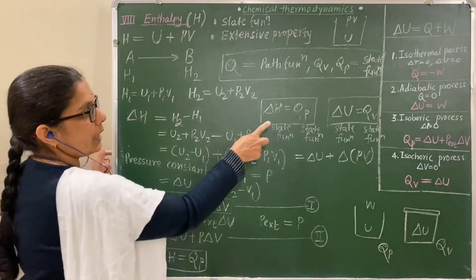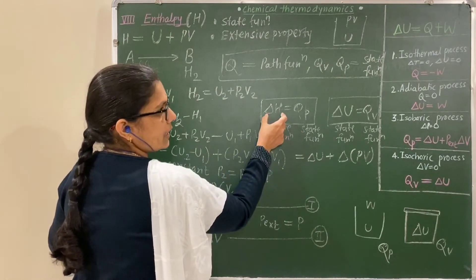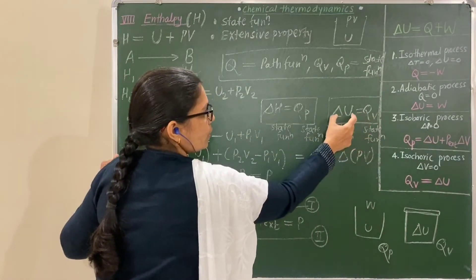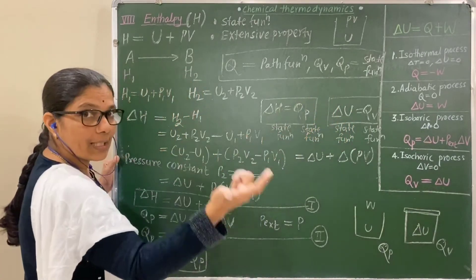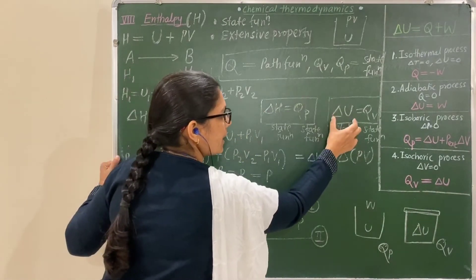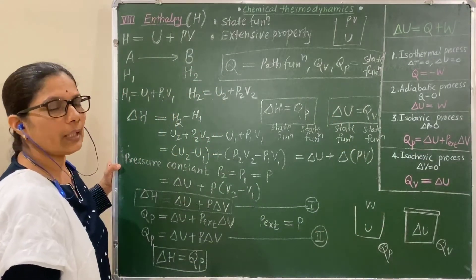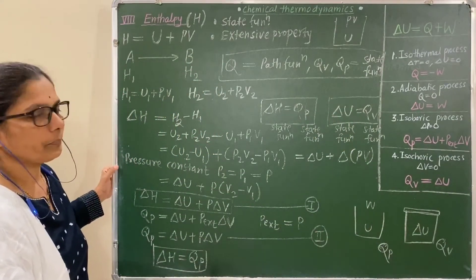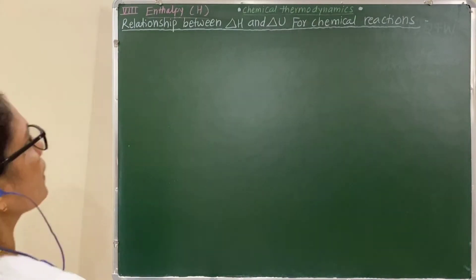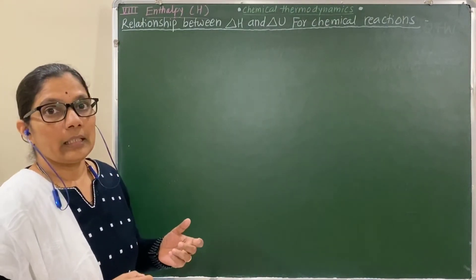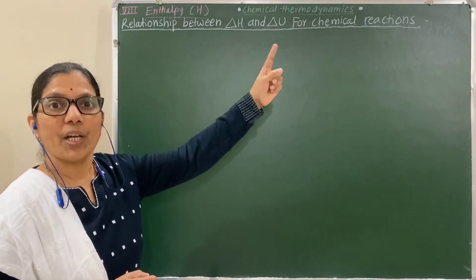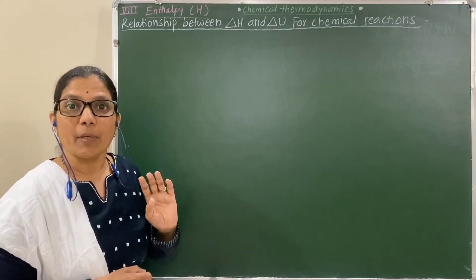Heat changes at constant pressure equal ΔH, and heat changes at constant volume equal ΔU. Now let us see the relationship between ΔH and ΔU for a chemical reaction.